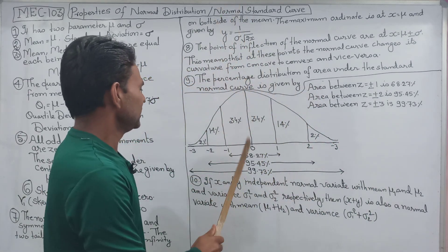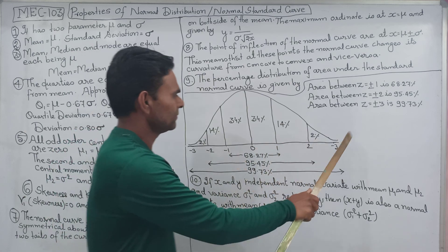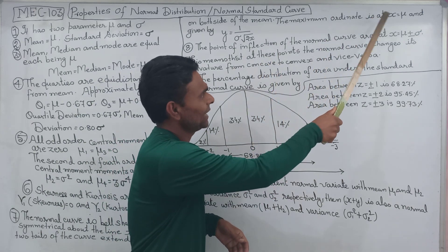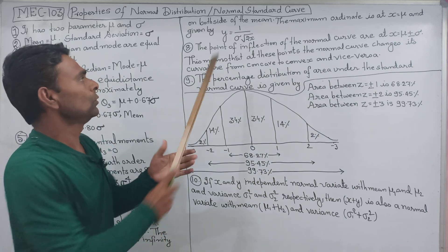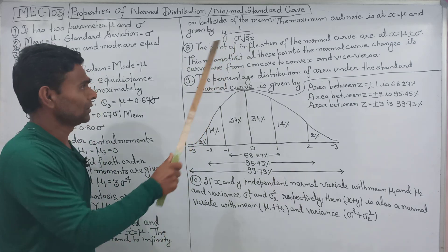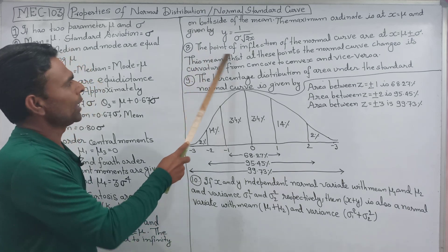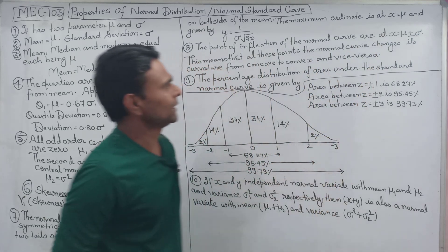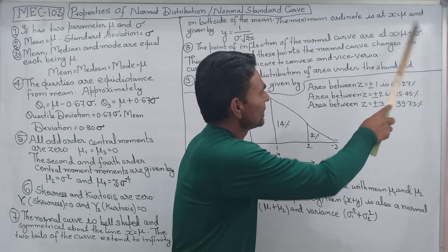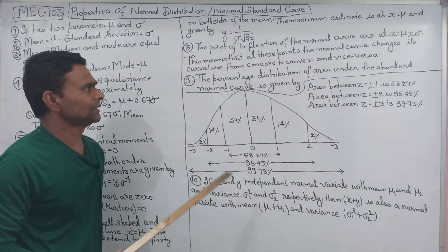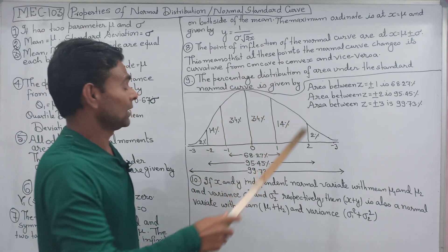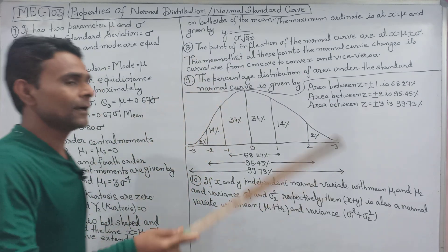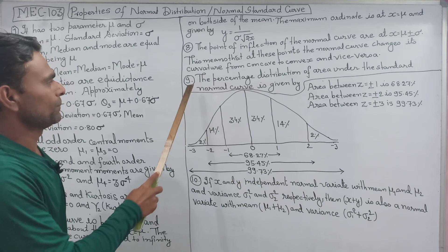The curve extends infinitely on both sides of the mean. The maximum ordinate at x = mu is given by y = 1 divided by sigma under root 2π. The points of inflection of the normal curve are at x = mu ± sigma, where the curve changes its curvature from concave to convex or convex to concave.